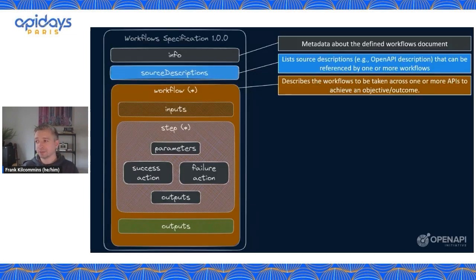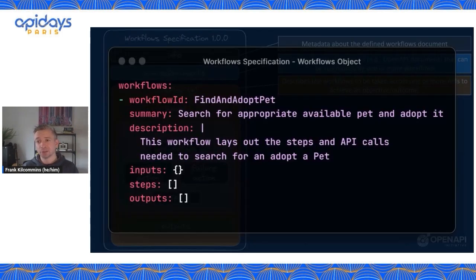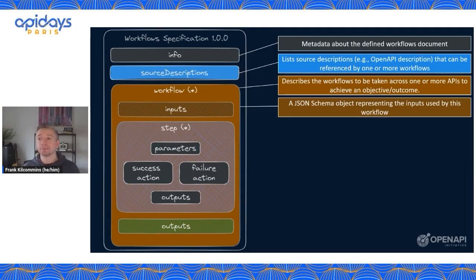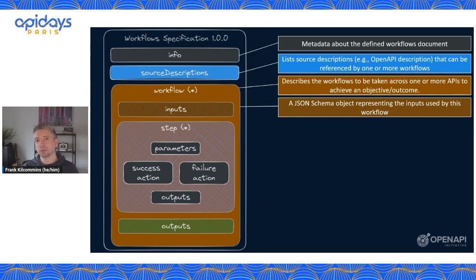Next up, we have the workflow itself, which describes the workflows to be taken across one or more APIs to achieve that business value outcome. Each workflow will have an ID, a summary, a description, and then input steps and outputs. Inputs are JSON Schema objects that will be required for the workflow to get up and running. Some workflows might need an API key or some other static information that can't be dynamically determined by the workflow itself, so the inputs allow whatever client is invoking the workflow to pass these things in.